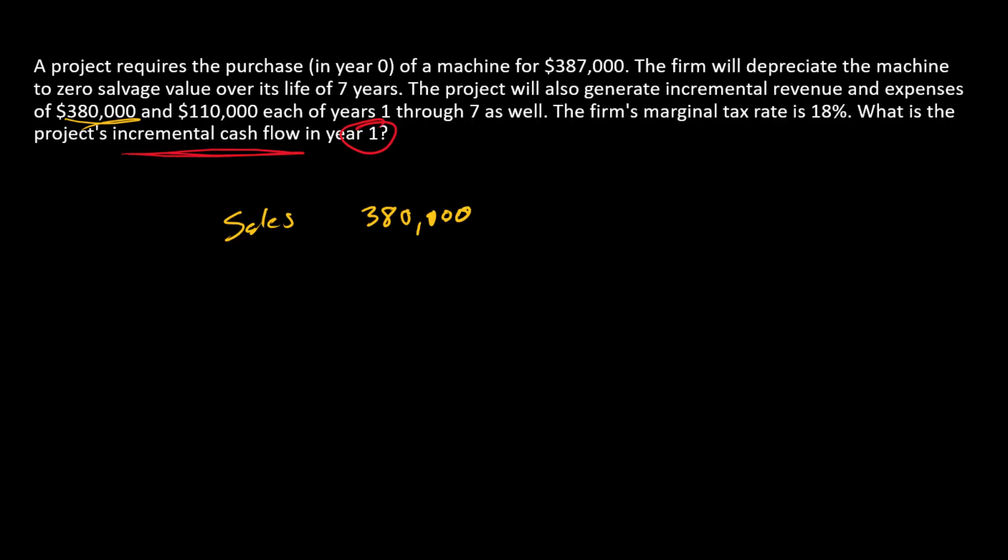That's like the top line of an income statement. Then we have incremental expenses or costs of goods sold of $110,000 per year. So we'll subtract that out. That's $270,000 per year.